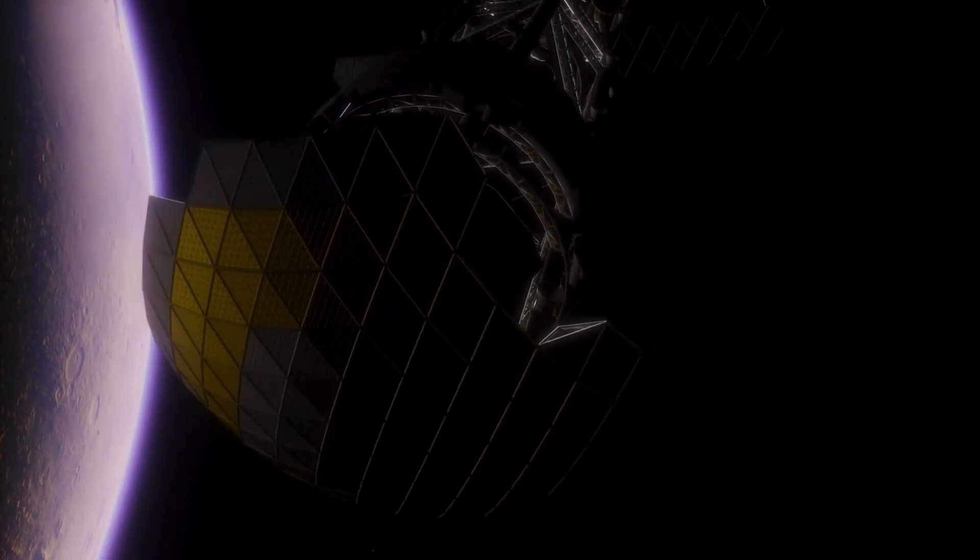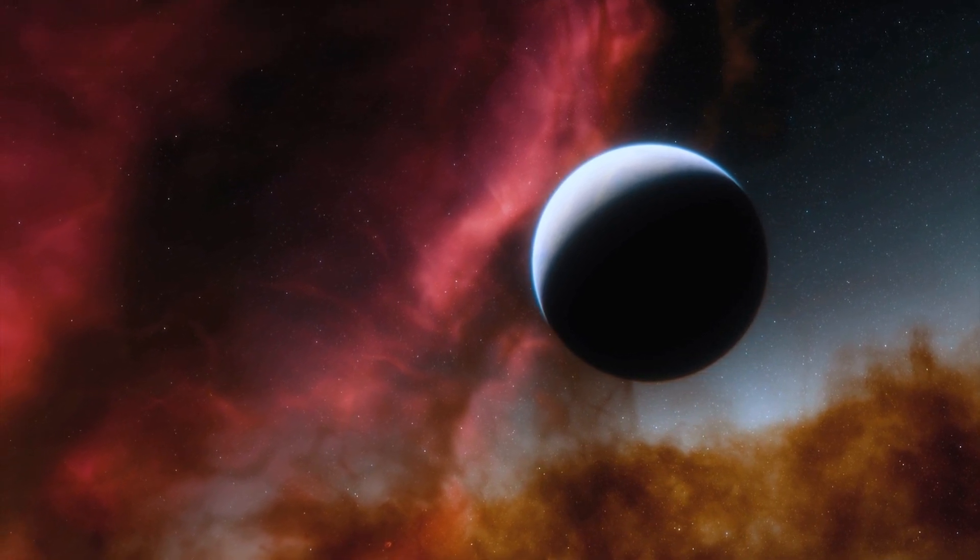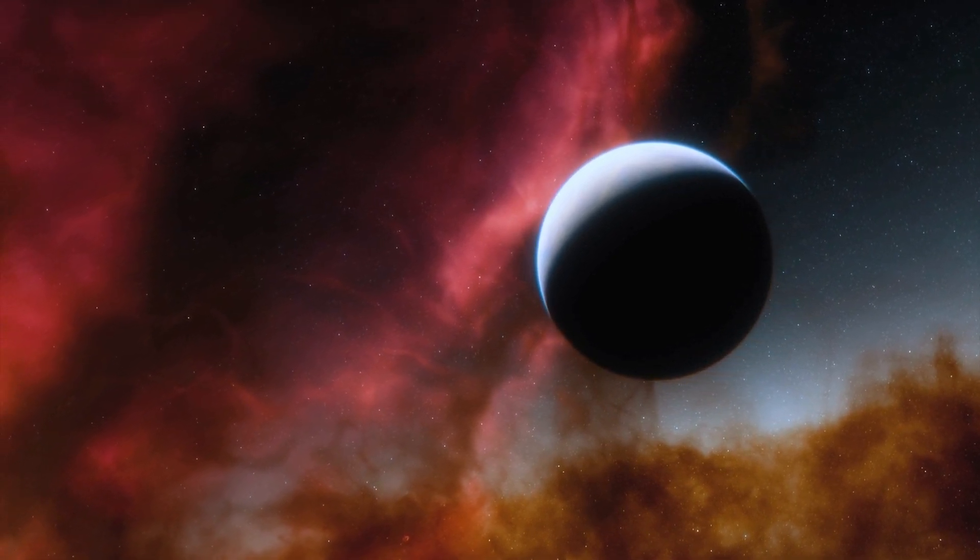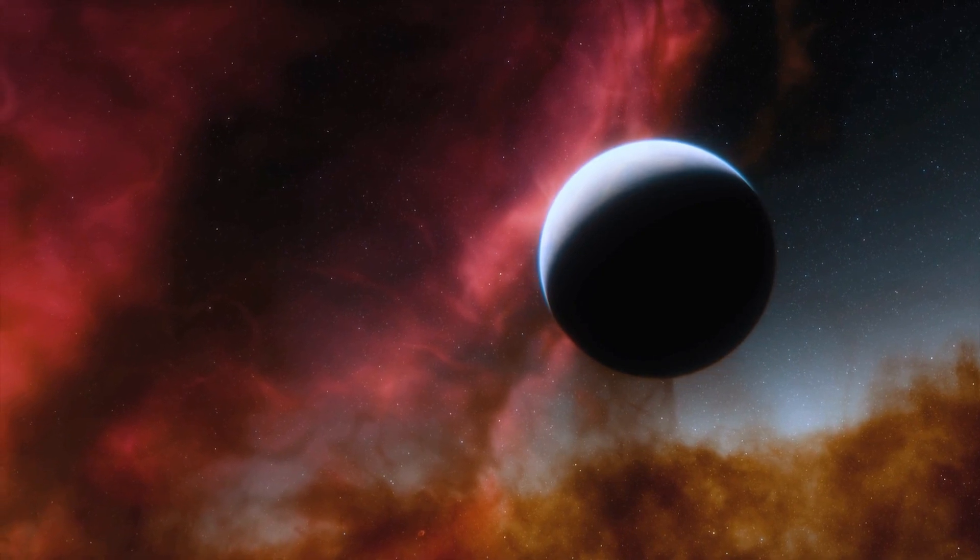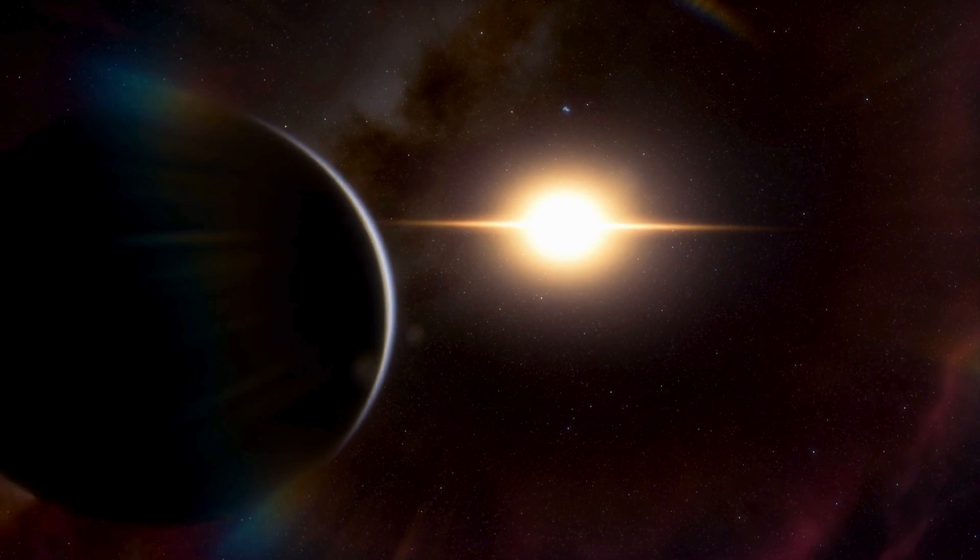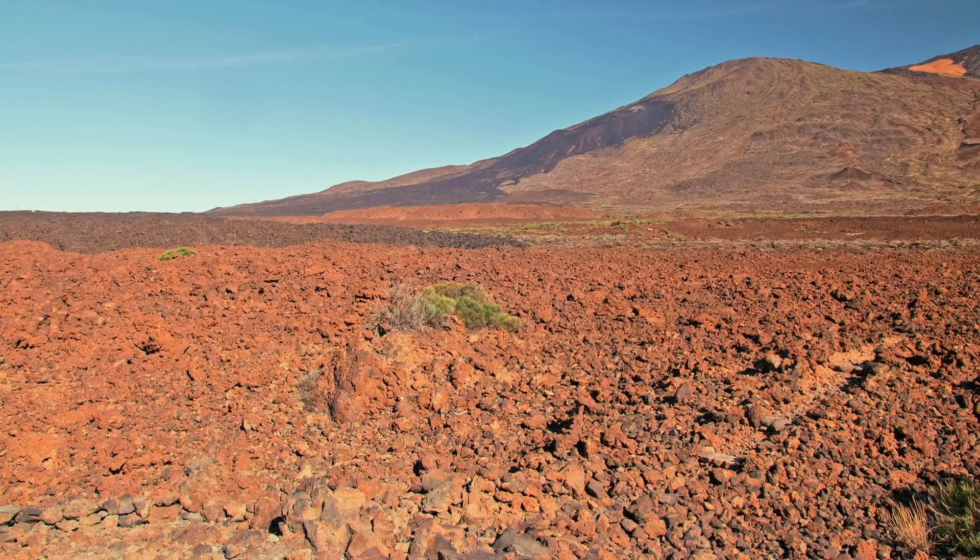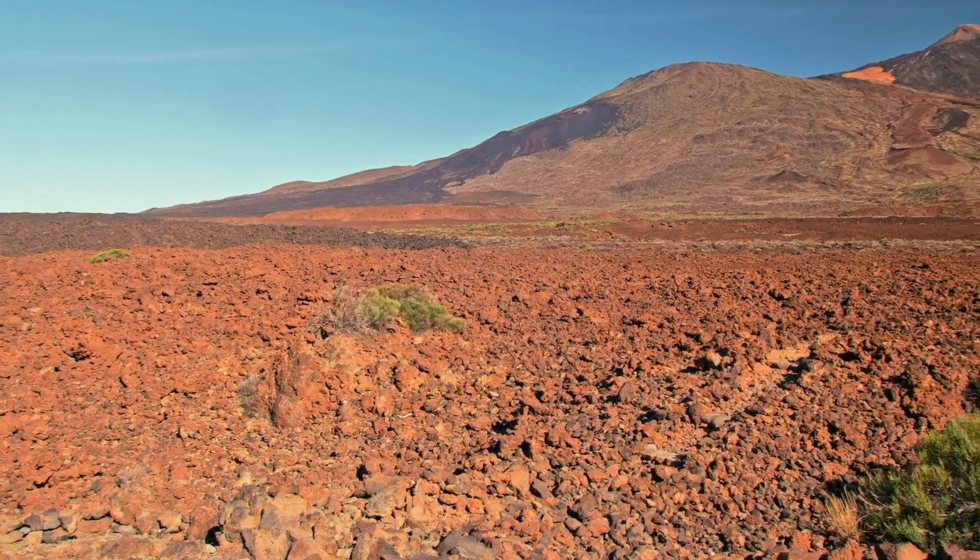This star is outstanding for being the nearest star system to our own after the Sun. This red dwarf star is located 4.23 light-years from our Sun, making it an interesting objective for cosmic investigations. The fact that Proxima b has conditions resembling those on Earth piques the interest of researchers and enthusiasts alike.